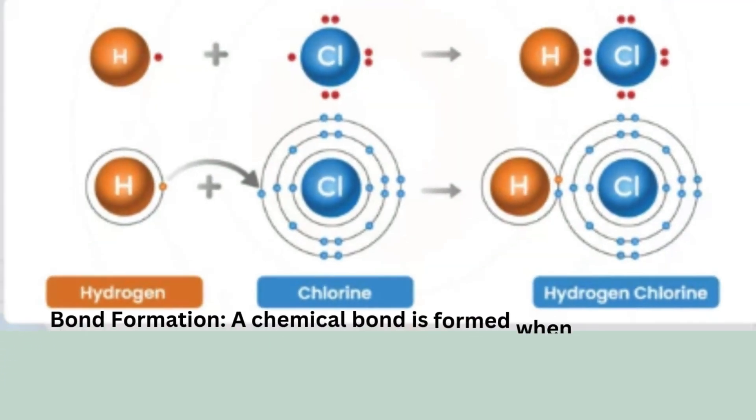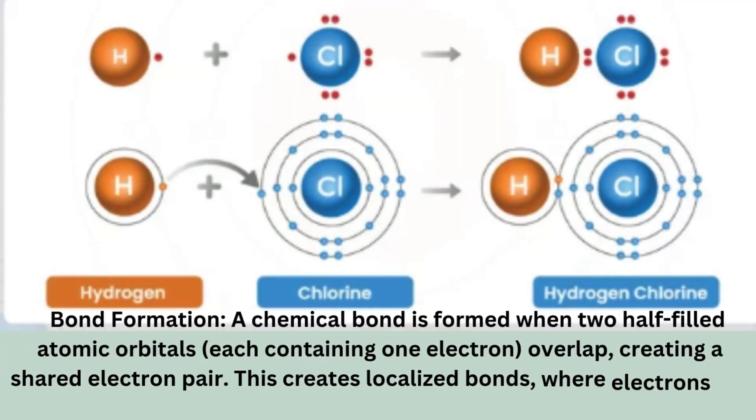Bond Formation: A chemical bond is formed when two half-filled atomic orbitals, each containing one electron, overlap, creating a shared electron pair. This creates localized bonds, where electrons are concentrated between the nuclei of the two atoms involved.